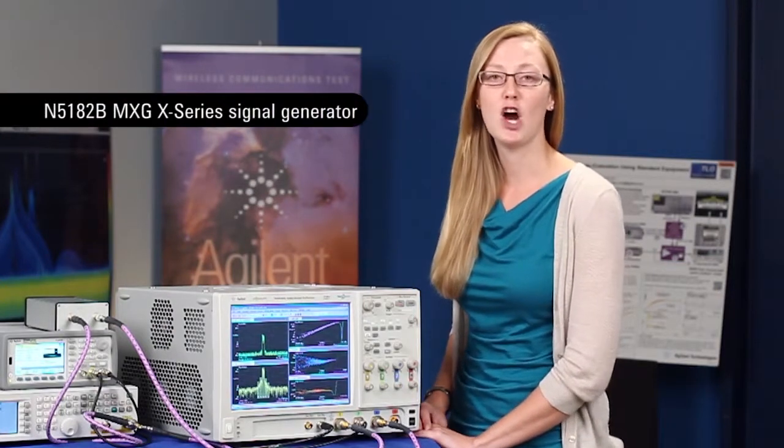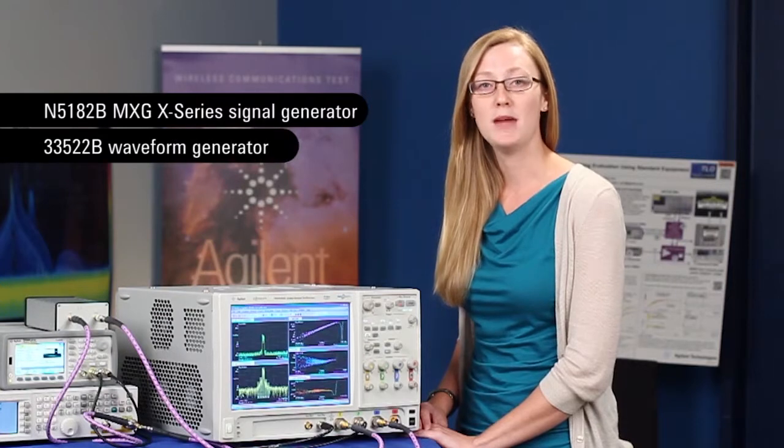The MXG signal generator is providing the RF input signal to the power amplifier. The 33522B arbitrary waveform generator is providing the envelope signal to the envelope tracking power supply. If you want to see more on how to generate these test signals, watch our previous video on envelope tracking.